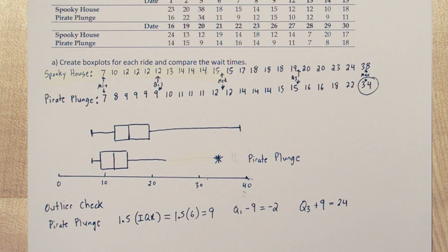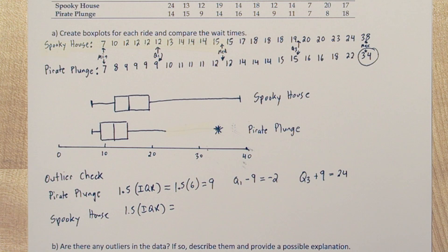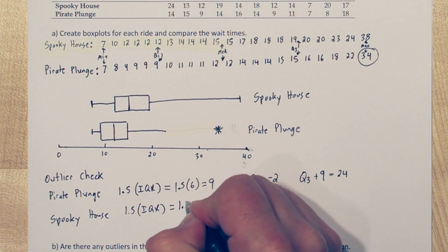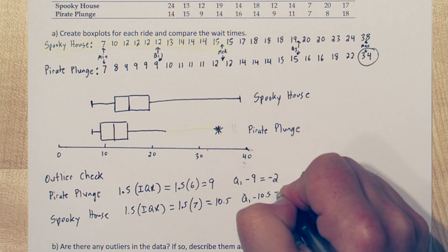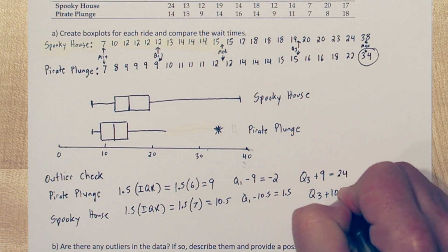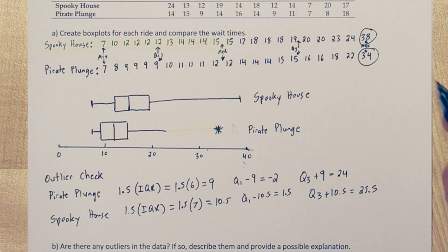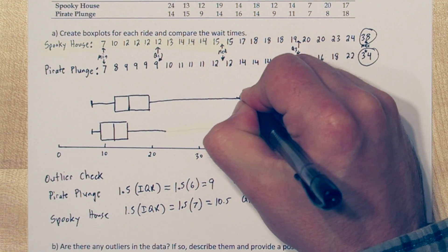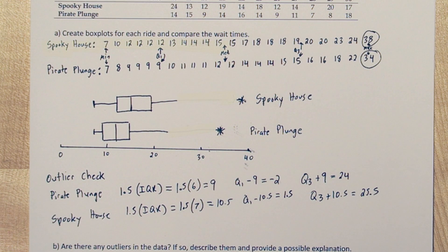Let's do the same outlier check for Spooky House. So for Spooky House, the IQR is 19 minus 12, so it's 7. 1.5 times 7 is 10.5. So when we subtract 10.5 from quartile 1, we get 1.5. Since our minimum waiting time was 7 minutes, we see nothing is lower than 1.5, so we don't have any lower outliers. For upper outliers, we're going to take quartile 3 and add 10.5 to it, which gives us 25.5. We actually have an upper outlier, the 38. So our highest value that's not an outlier is a 24. So we'll replace the 38 with an asterisk, and we'll erase the whisker all the way down to 24. Now we've modified both box plots to clearly show the outliers.